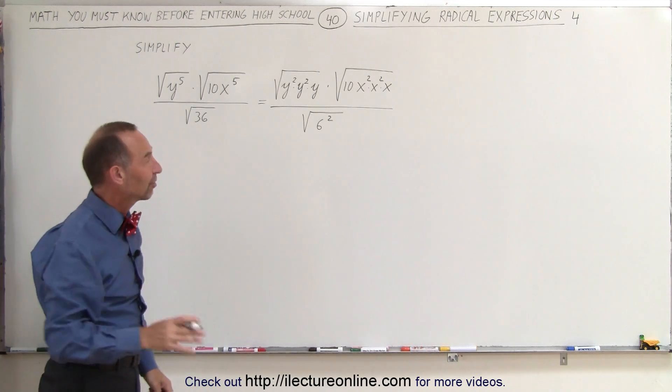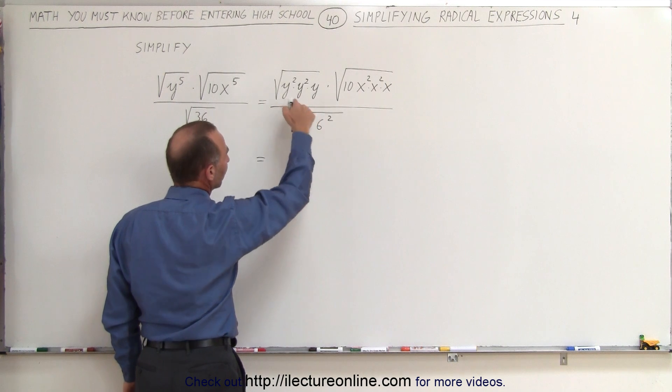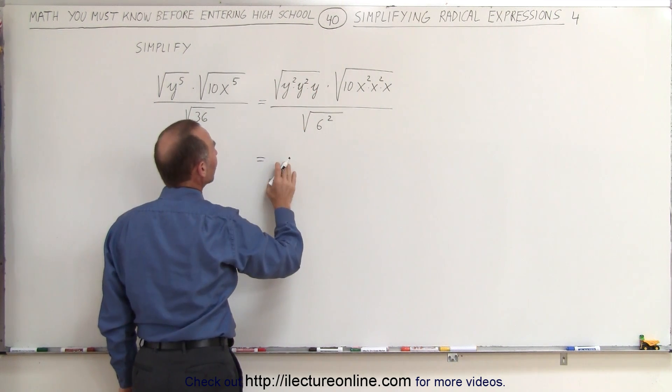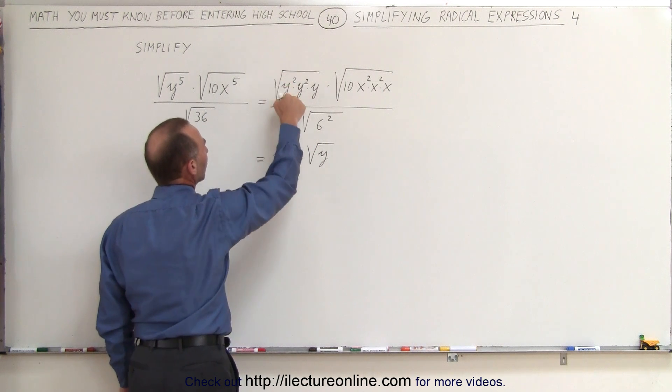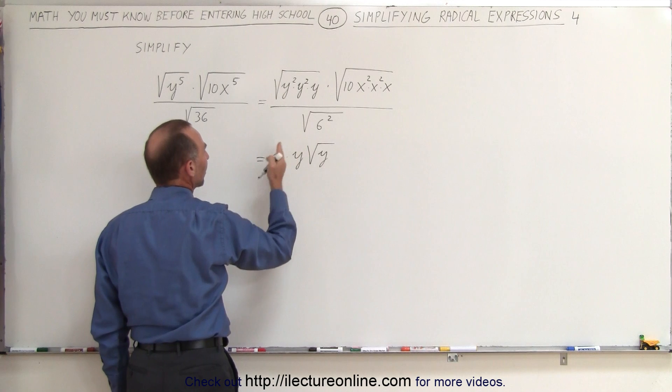Now we can go ahead and simplify that. For each letter or number, or each variable or number that is squared, we can simply take it out of the radical sign. So this can be written as y times y times the square root of y. Again, the square root of something squared simply becomes that item. So the square root of y squared is simply y.